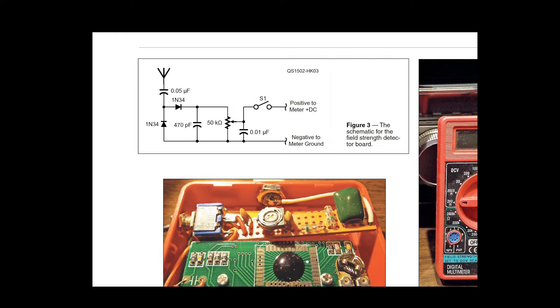We didn't use a switch in ours because we are not using a digital display that requires battery power like the multimeter. So we were good there. And then you have your positive to meter DC and negative to meter ground, and as we saw we just have that going right into the back of our analog meter which seems to work just fine.